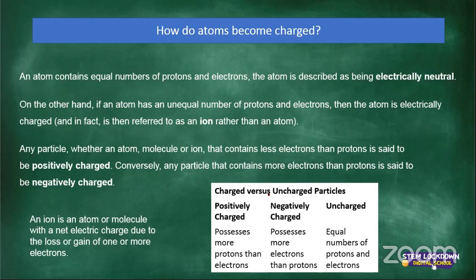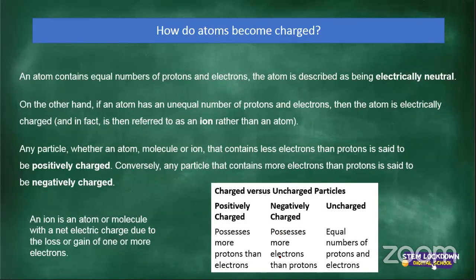Charged versus uncharged objects: positively charged means possessing more protons than electrons. Negatively charged means possessing more electrons than protons. Uncharged means there is an equal number — a balance of protons and electrons.